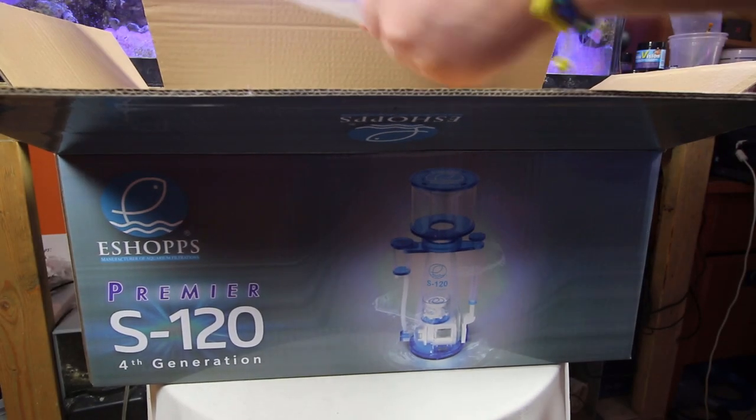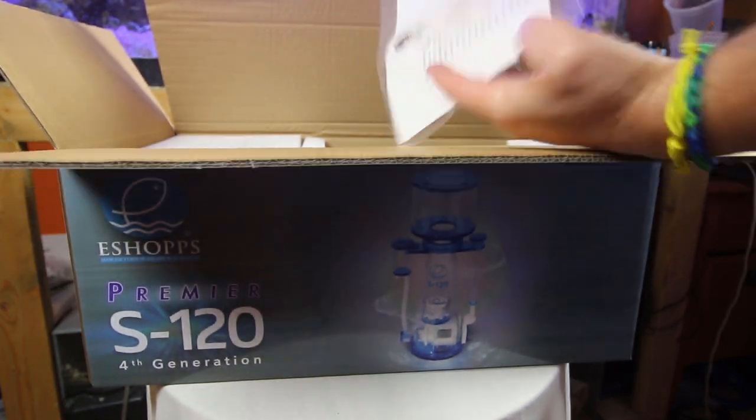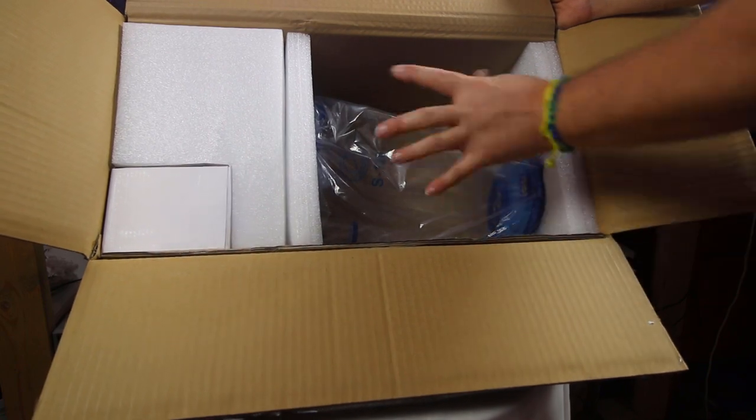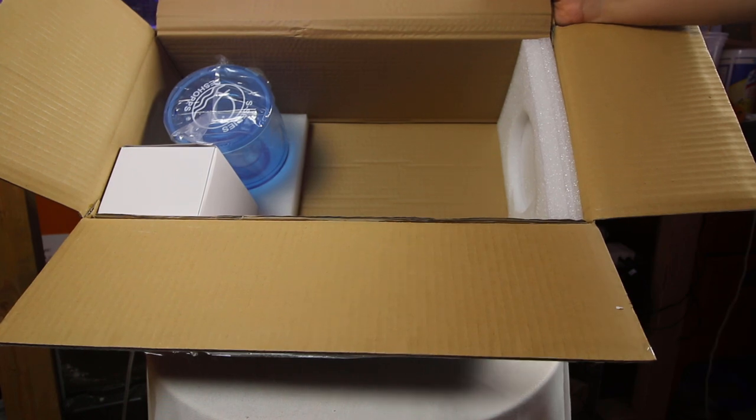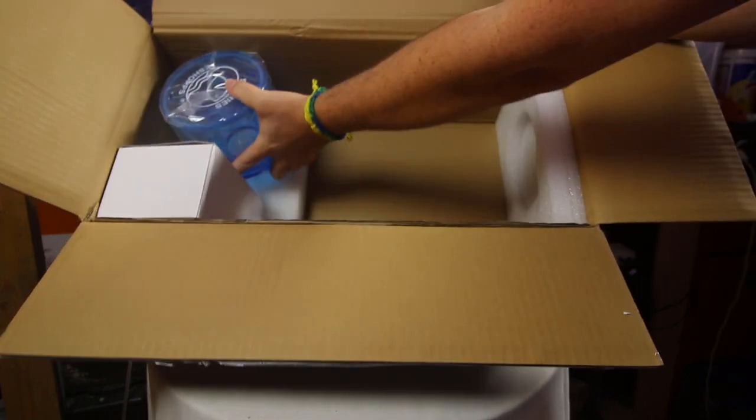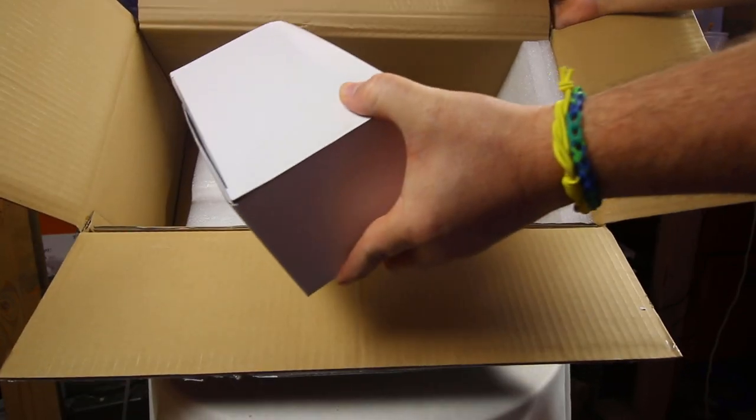Inside we have our quick start guide. Then we have the body of the skimmer. Take this bad boy out. Our collection cup. And then, of course, our pump. Easy as that.